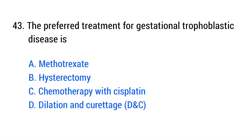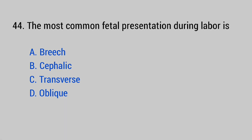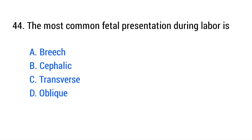Question number 43. The preferred treatment for gestational trophoblastic disease is? The right answer is option D, dilation and curettage.